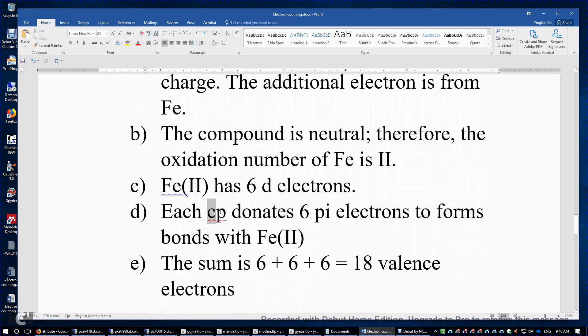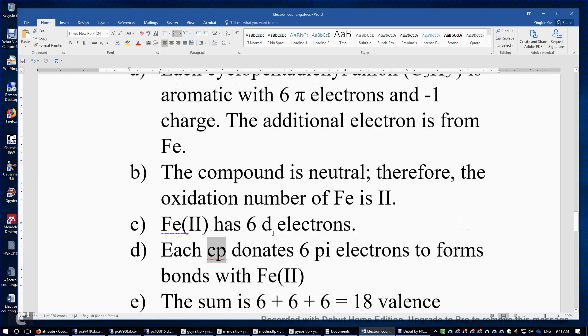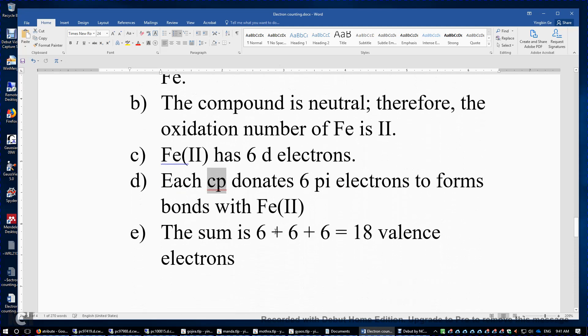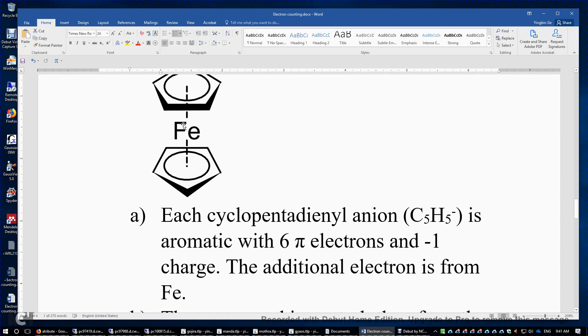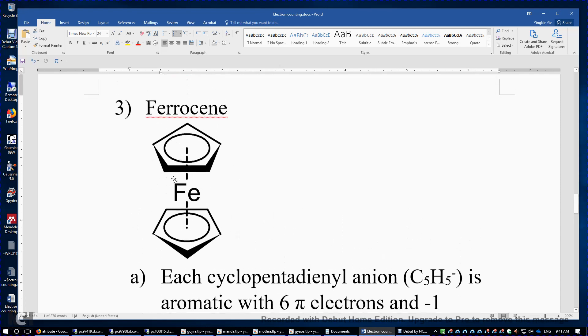Again, each cyclopentadienyl anion may donate 6 pi electrons to form bonds with this iron. And if we look at the naming of this, the naming of this, it's going to be actually bis eta-5 cyclopentadienyl iron(II).